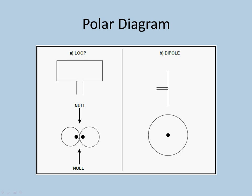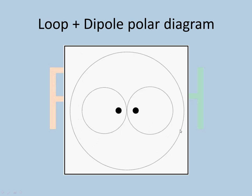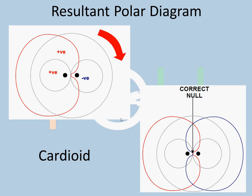This figure-of-eight pattern doesn't give a good position because it has two nulls. The direction of the beacon can be determined but is not very accurate — it gives only an approximate direction. To solve that problem, we introduce something called a sense aerial, which is a simple dipole aerial with a circular polar diagram. These two polar diagrams are combined electronically as if the sense aerial was in the middle of the loop aerial. The relative signal strengths get added up, and this is the resulting polar diagram — a cardioid.